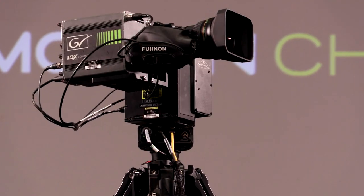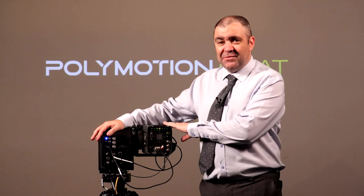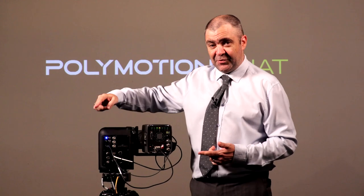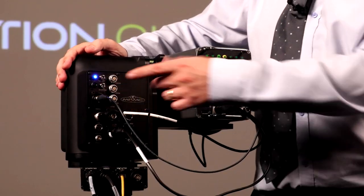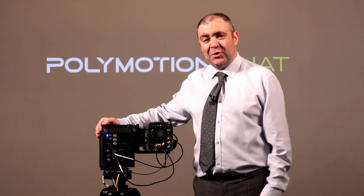In this case, we're using a standard broadcast camera, just a normal box camera with a lens. This is the AFC 100, the slip ring version, so it can completely rotate 360 degrees. All we need to do is plug in the video, the lens control, the power, and the ethernet, and everything else is controlled by the server.